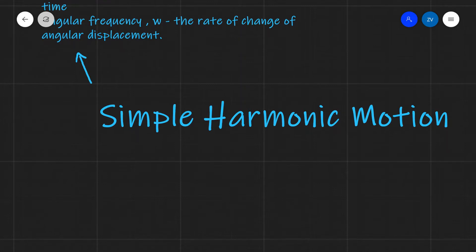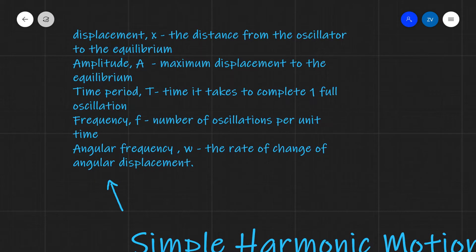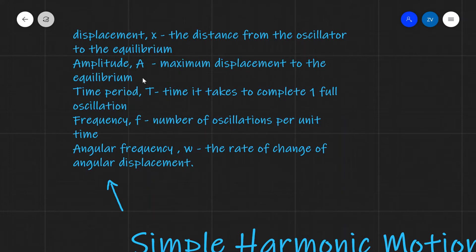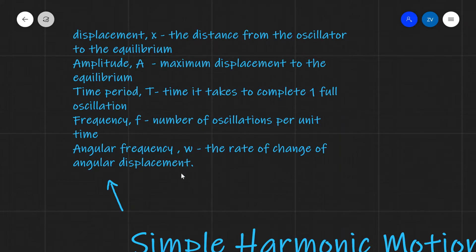Let's have a look at some of the basic terms that we're going to be using. So first of all, displacement — this is a vector quantity which signifies the distance from the oscillator to the equilibrium position. Our amplitude A is the maximum value of our displacement. Time period T is the time it takes to complete one full oscillation, frequency is the number of oscillations per unit time, and angular frequency omega is your rate of change of angular displacement.